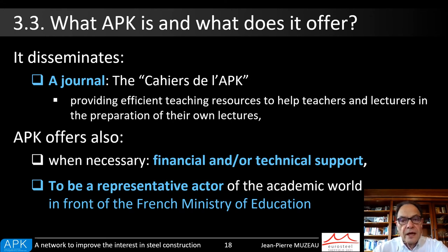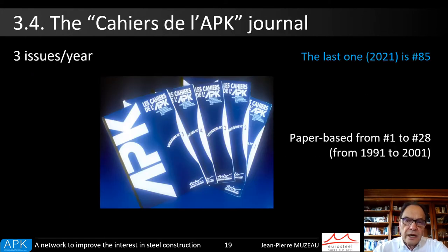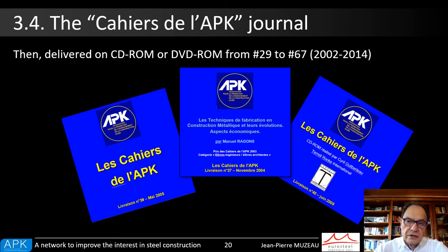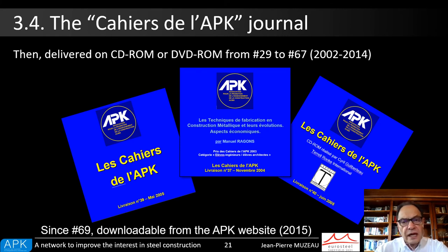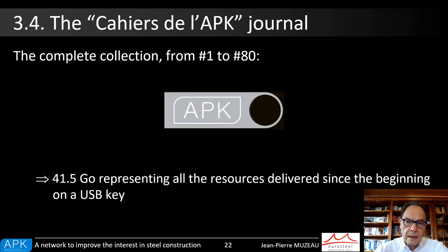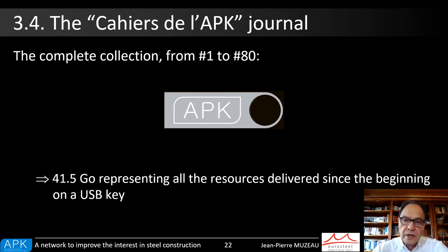When necessary, the APK puts money on the table. It may also represent academics in front of the French Ministry of Education. Up to now, 85 issues of the Cahiers de l'APK have been disseminated. At the beginning they were paper-based, then provided on CD or DVD-ROM, and finally downloadable from the APK website. A USB key containing the full set of the APK journal — more than 40 MB — is proposed to new members. The last one contains issues from number 1 to number 80, and the next one, expected in 2022, will propose everything until number 85.